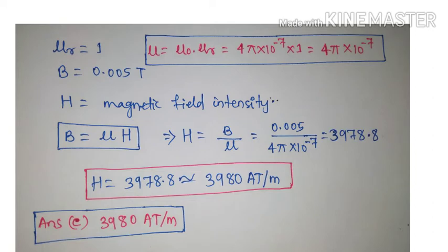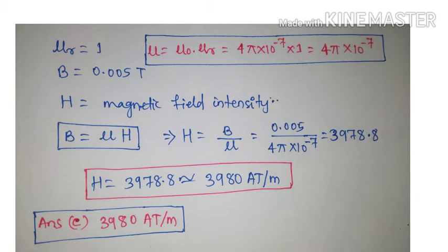Our goal is to calculate magnetic field intensity H. We know the formula B equals μH. We have the relative permeability, so we need to calculate the absolute permeability μ. Permeability μ equals μ₀ into μr, where μ₀, the permeability of free space, equals 4π into 10 to the power minus 7. Since μr equals 1, μ equals 4π into 10 to the power minus 7.